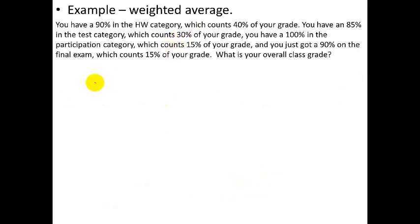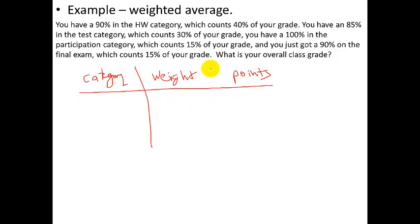So I've rewritten the problem here, and here's how we're going to do it. We're going to make a table, and we're going to say category, weight, points. So first category, homework. I have a 90%, so .90. And that counts 40%, so the weight is 40%. Sorry, I made a mistake here. The weight, or percent of the total, we're going to put as decimal. This one we're going to leave as a 90%.